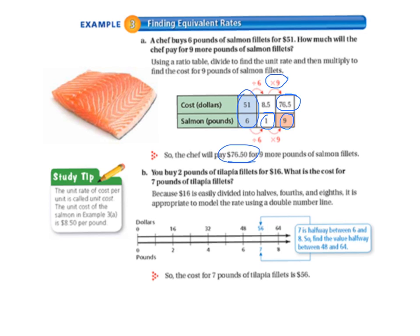So we can see that 2 pounds is $16. That's right there on the double number line. And then we can just mark it out and see that 4 pounds is $32, 6 pounds is $48, 8 pounds is $64. And halfway between 6 and 8 would be 7 pounds at $56. So the cost for 7 pounds of tilapia fillets is $56.